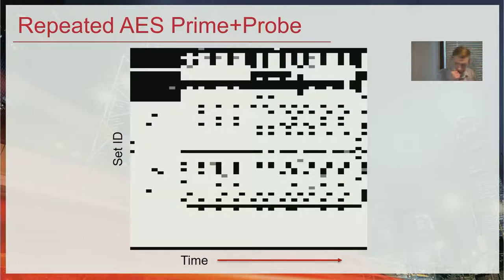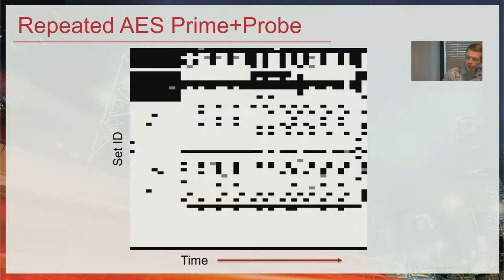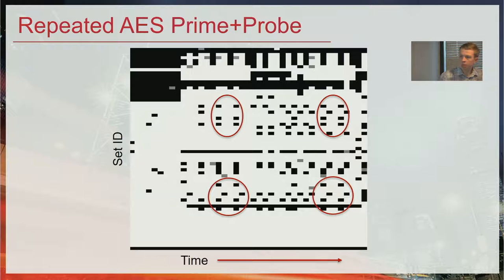Here's an example of a prime and probe attack on an AES implementation done repeatedly in a loop. In the diagram, rows represent different cache sets and time increases from left to right — each column of pixels is one prime/victim/probe iteration. Every white pixel represents where we know the victim evicted something from that set. We can see repetitions over time: the pattern at the bottom repeats more than once, and the pattern at the top also repeats — indicating that there is some sort of repetition even just by looking at the cache attack trace.